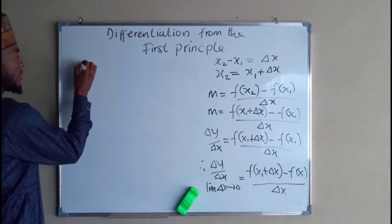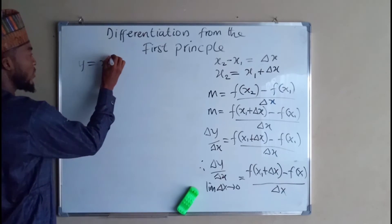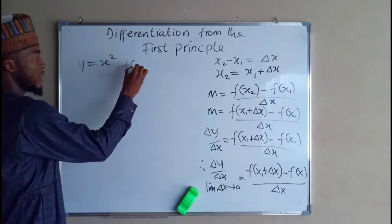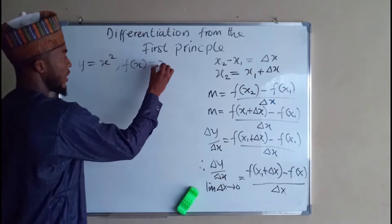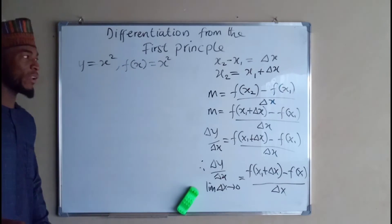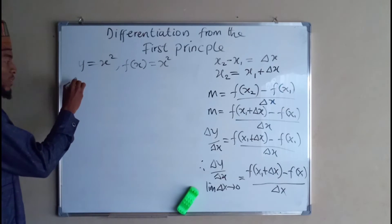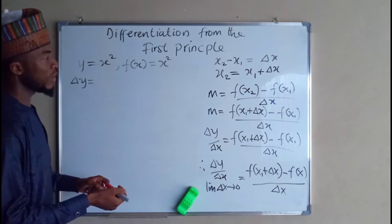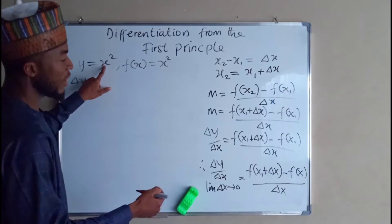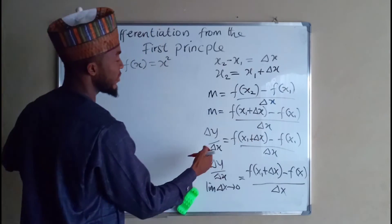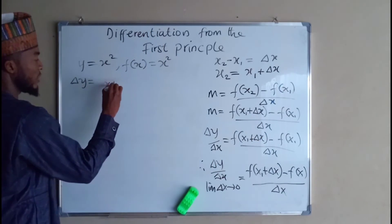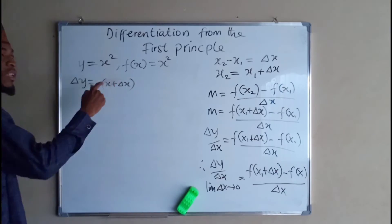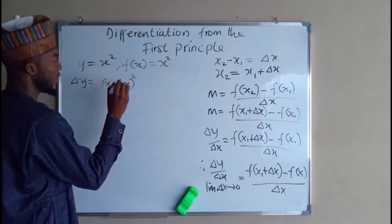Suppose we have y equals x squared. You know that f of x equals x squared, because y is a function of x. Then, change in y is equal to — and we are going to replace this x with x plus dx. So we have x plus dx, but in this case x has a square, so we have to square this.